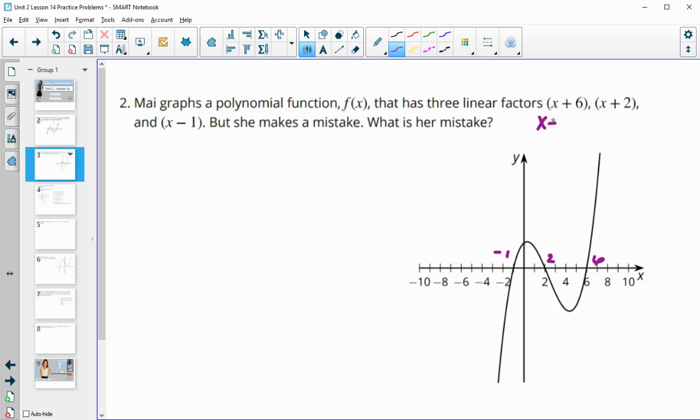If we set these factors equal to 0 and solve, we would subtract 6 to get negative 6 as a zero, subtract 2 to get negative 2 as a zero, and add 1 to get positive 1 as a zero. She forgot to use the opposites of the factors to find the zeros.